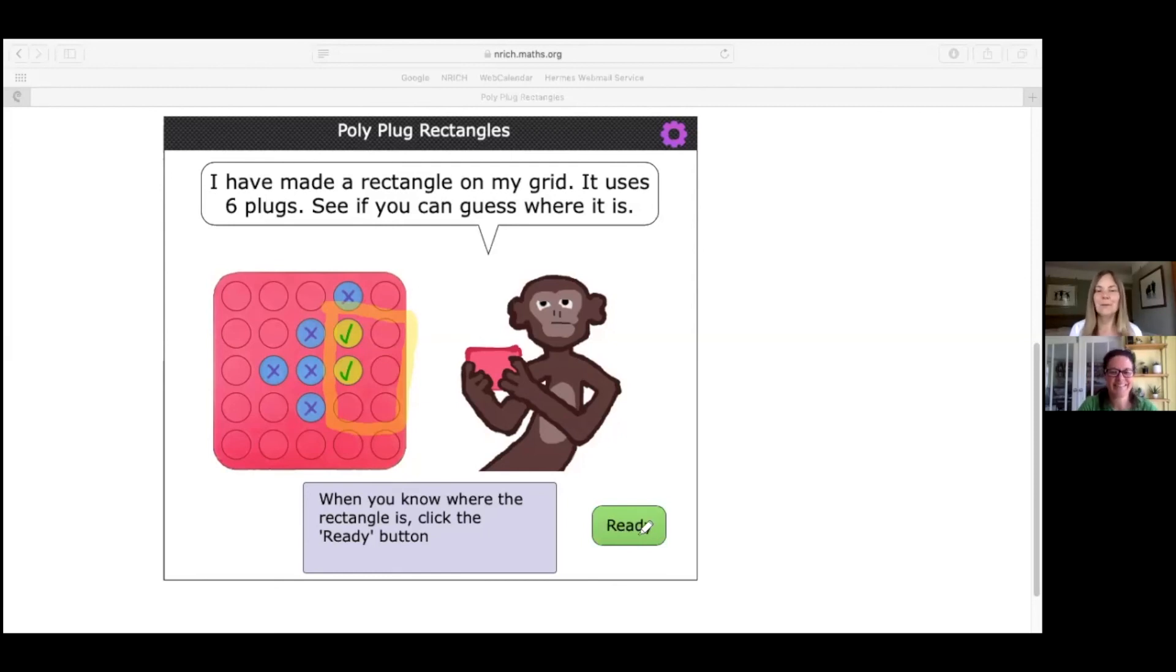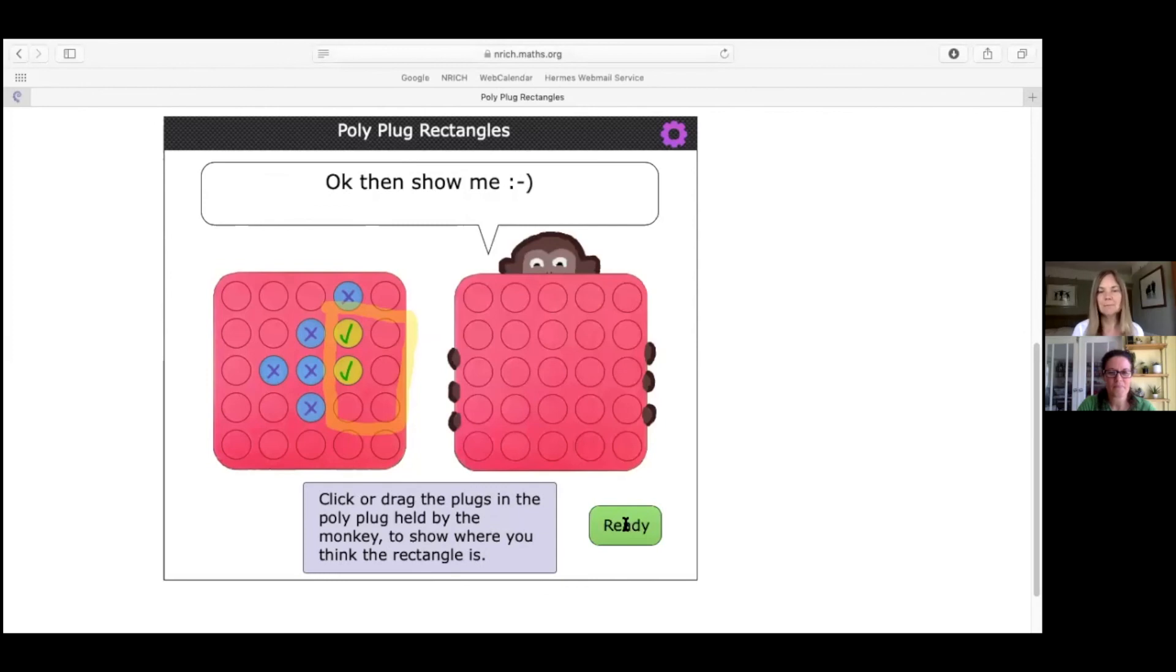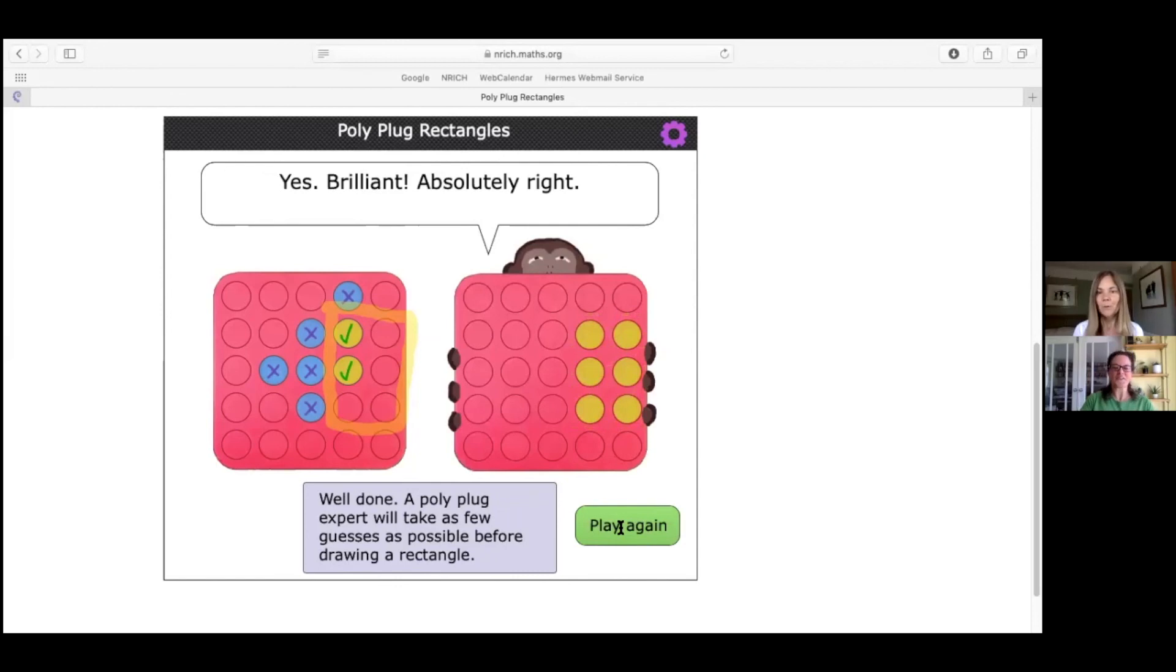Okay, let's do it. Oh, I just have to get rid of my pen tool. There we go. Click on ready. All right. So Monkey is asking us to show him where it is. I shall just try and highlight. Here we go. I'm pretty sure that's the right rectangle. We're ready. Oh, fabulous. Yes, brilliant. Absolutely right.